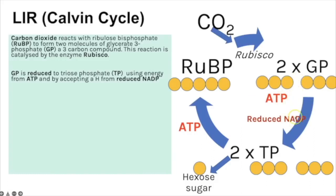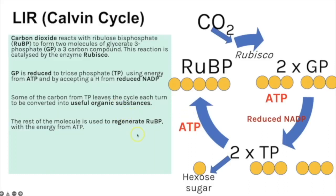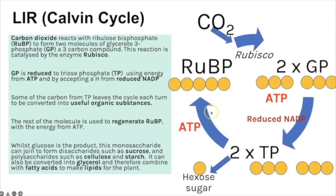This is where one ATP molecule is used and where the reduced NADP is used. GP picks up the hydrogen so NADP is reformed, and GP is reduced to form TP — that reduction also requires energy from ATP. The TP is then used for two things: one carbon is removed from the two three-carbon TP molecules toward creating a hexose sugar, leaving five carbons behind. ATP is then needed to regenerate RuBP from those remaining carbons.